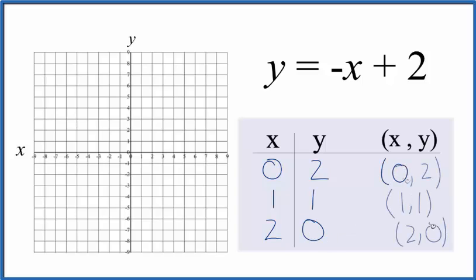So these are the points we'll graph for the linear equation y equals negative x plus 2. We go to x is 0, and then y is 2. So x is 0, y is 2. That's the y-intercept. We go to x is 1, y is 1. So x is 1, y is 1.